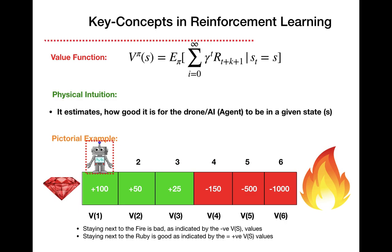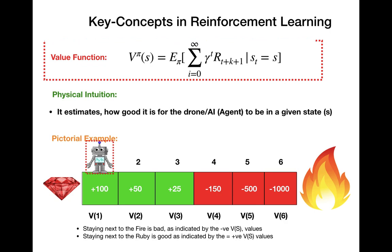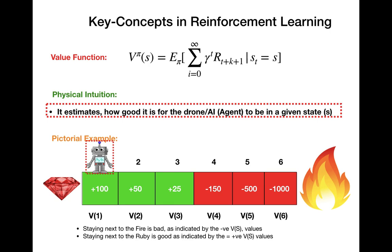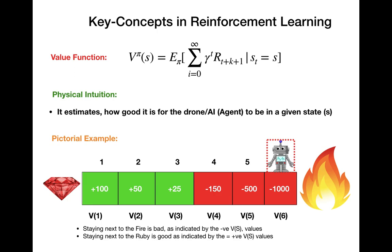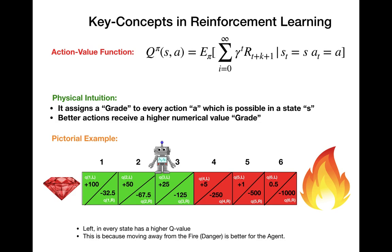Now we will have a look at what is called a value function. A value function is a way to rank the state where a robot finds itself. In the pictorial example there is a ruby on the left and fire on the right. If our robot is close to the fire it is in a bad state — it will get burnt. If it is close to the ruby it is in a good state. The value function represents this mathematically: close to the fire has a value of minus 1000, and moving away to a farther state has a value of minus 150, which is slightly better.